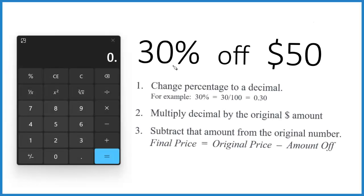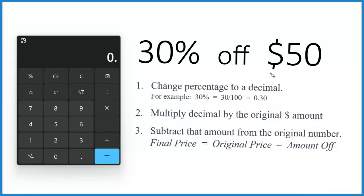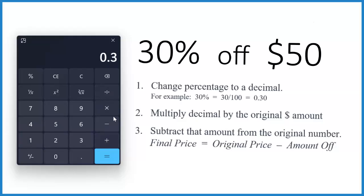Let's figure out how much you save when you take 30% off of $50. We want to know what discount we get if we have 30% off a $50 purchase. First thing we do, we change that 30% — change the percentage to a decimal. You do that by dividing by 100. So you take 30, divide by 100, and that gives us 0.3.